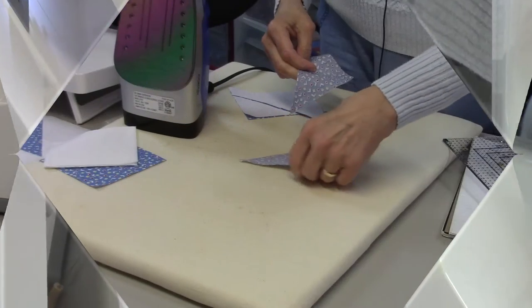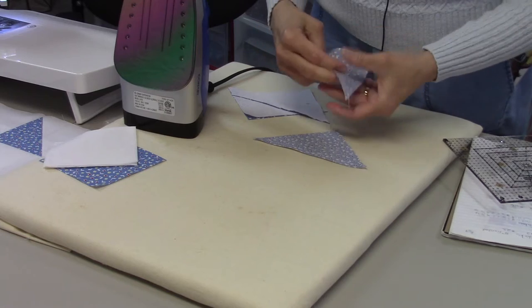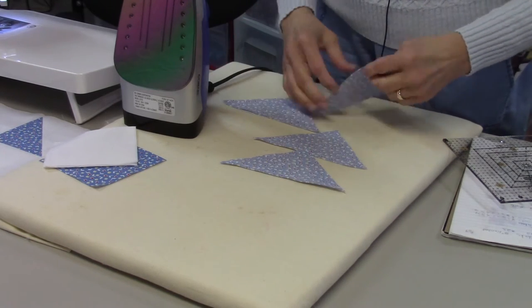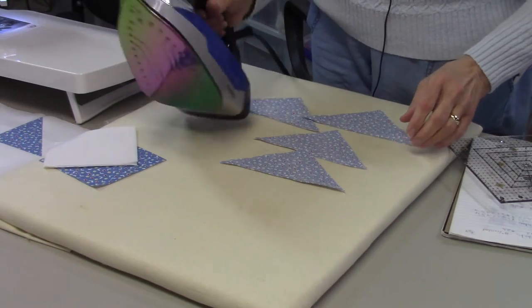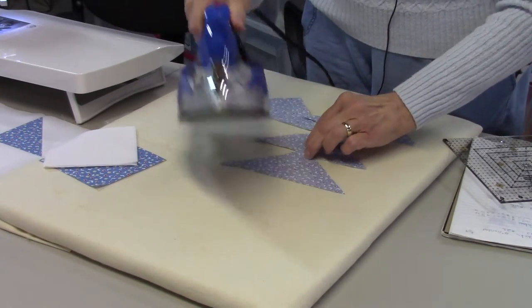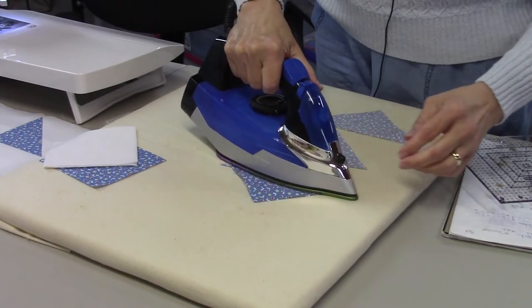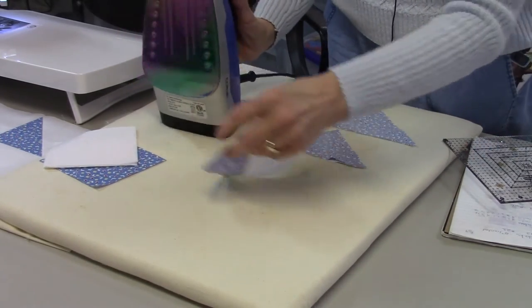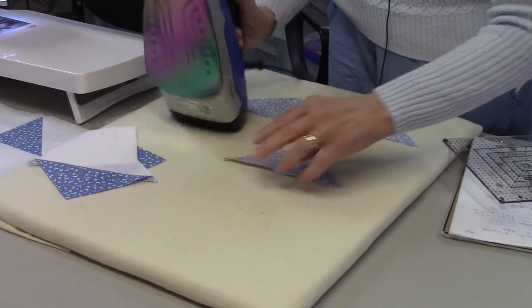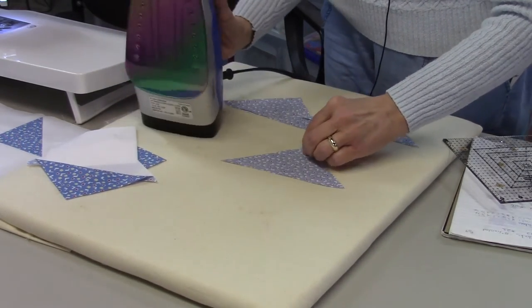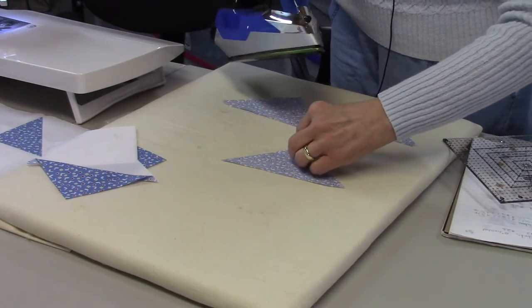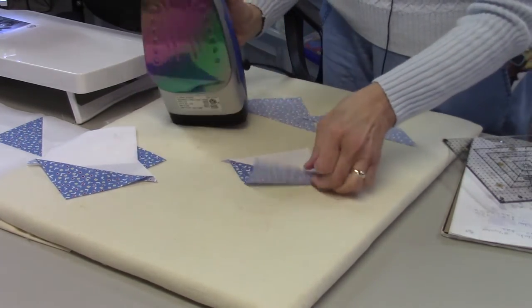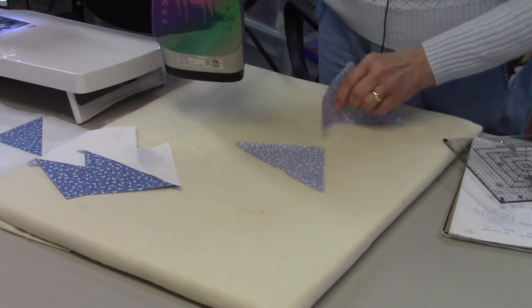Now we're going to do some pressing. I do have steam on my iron right now, but you don't have to have that. I'm going to press all of these to the dark side, so I'm just going to press them the way they are sewn and then open up to the dark side. Whatever side you want your seam pressed to, lay that side up, and it just makes it a little bit easier for you.